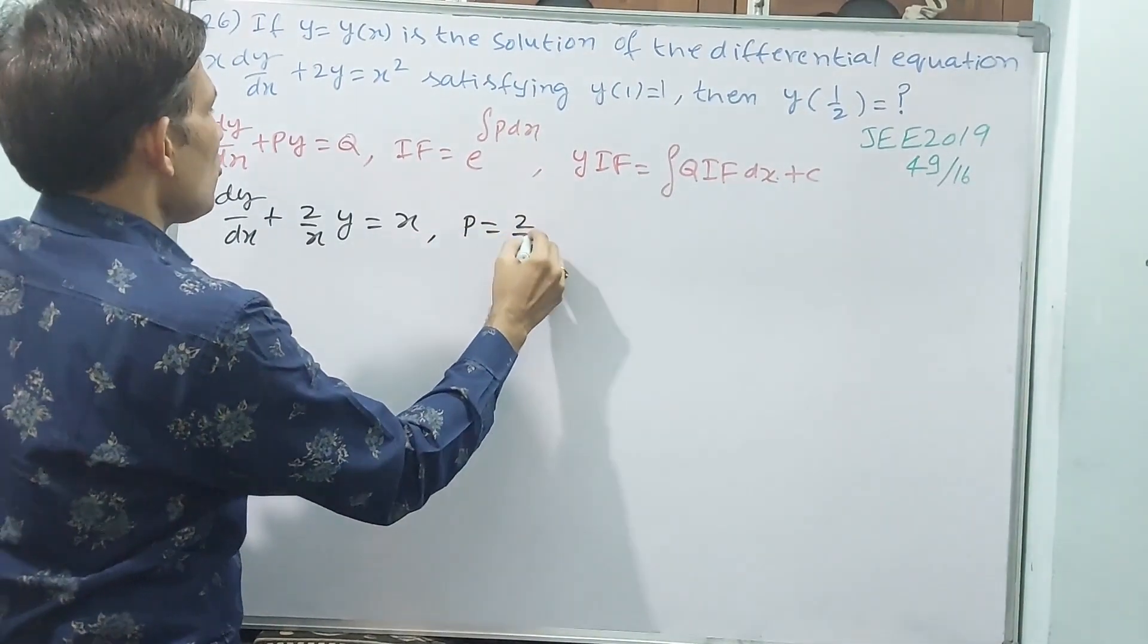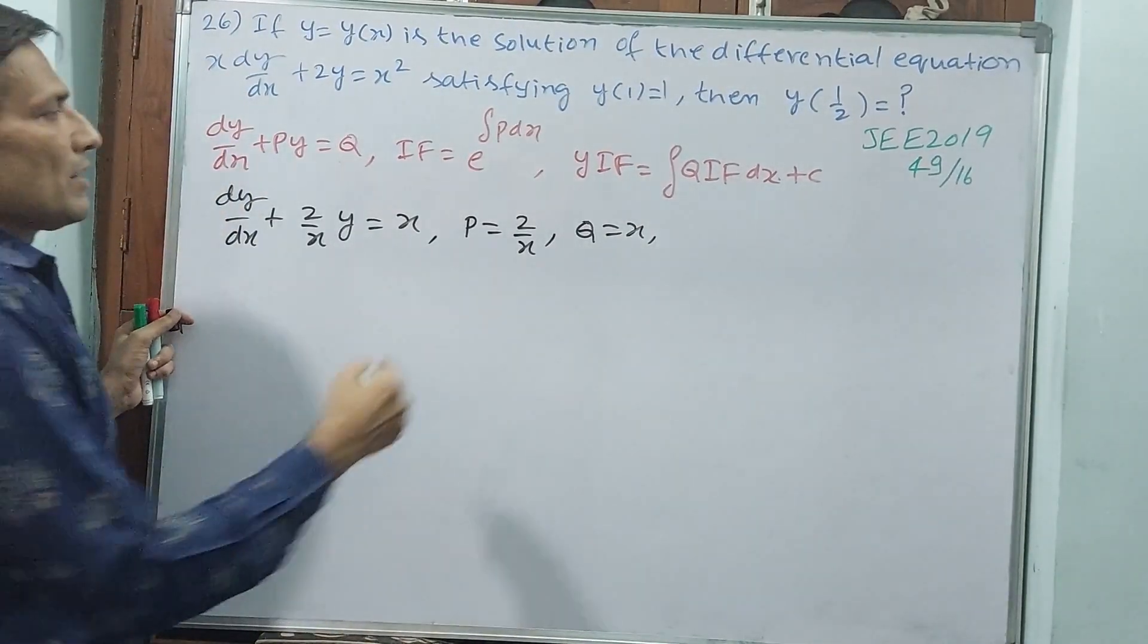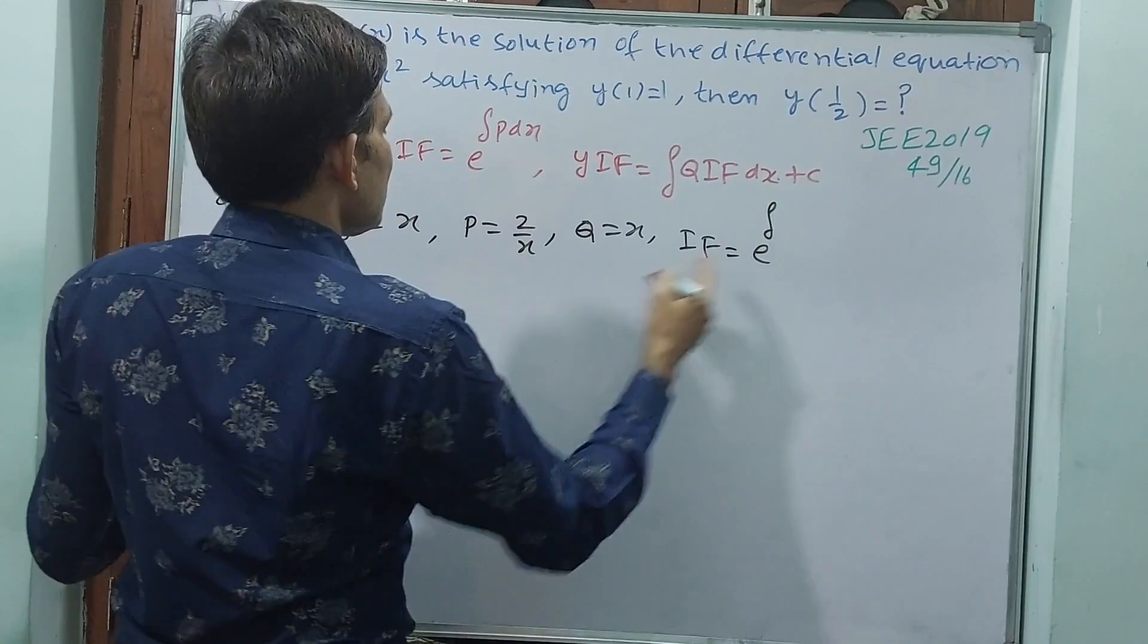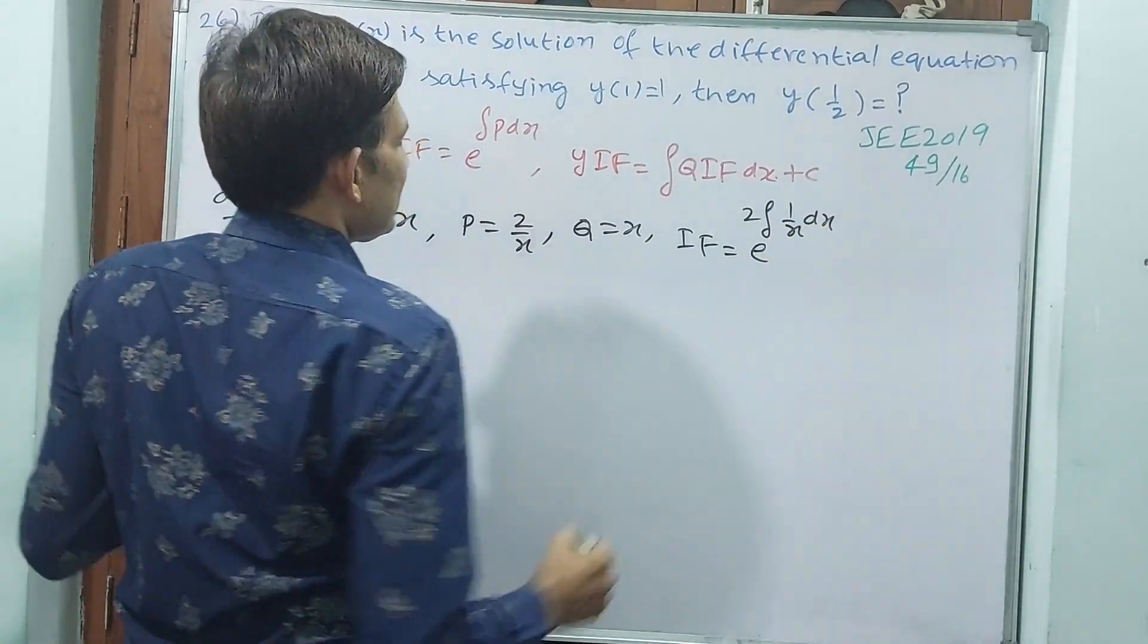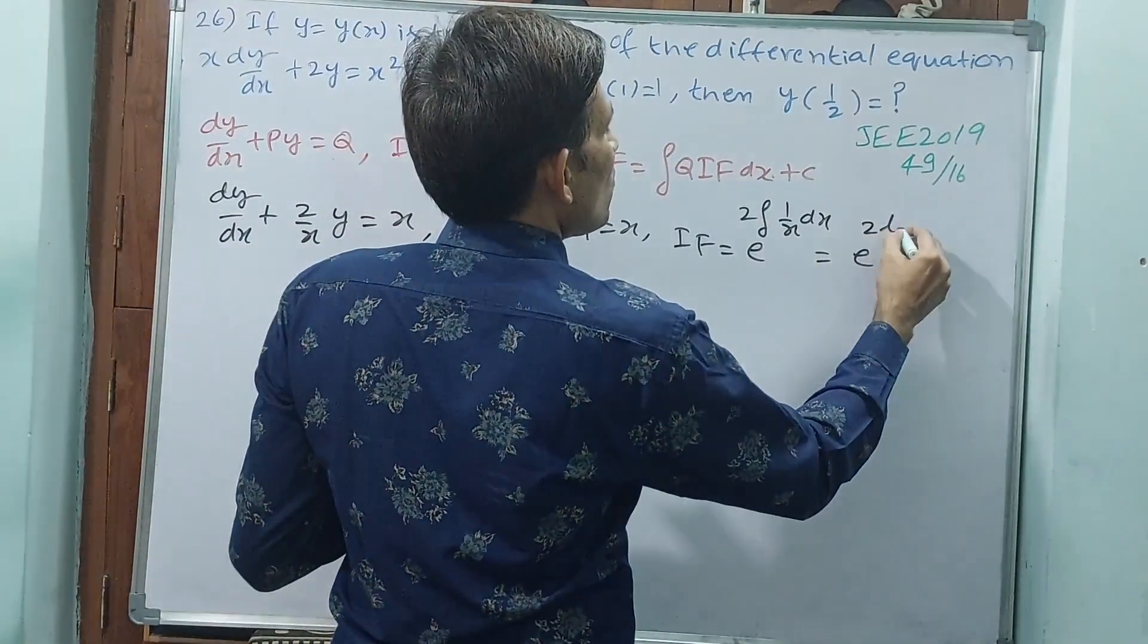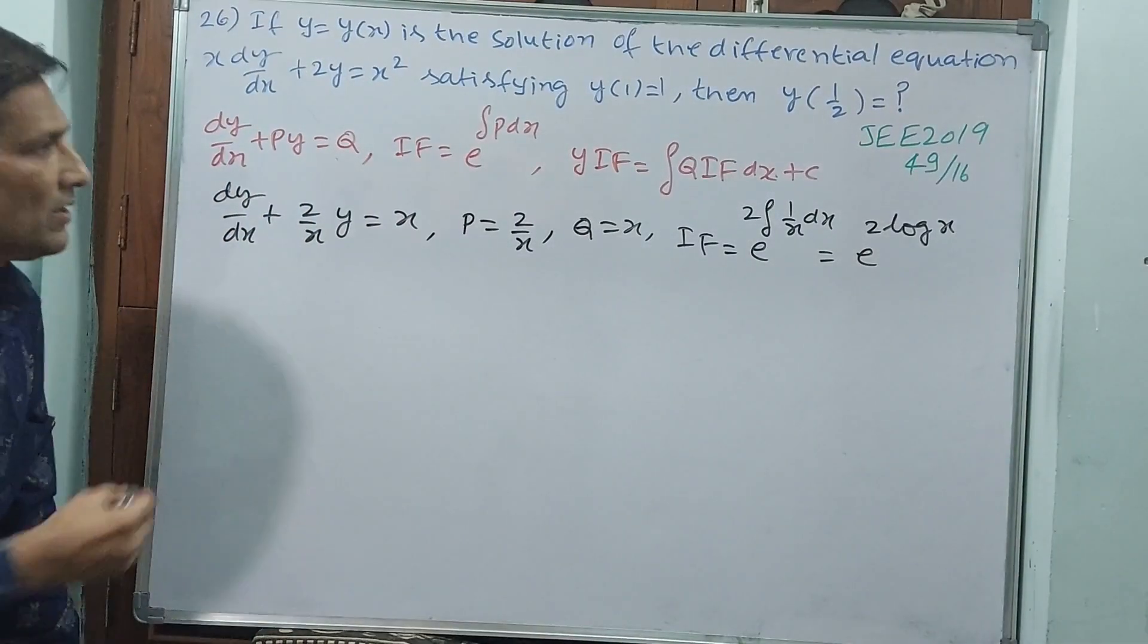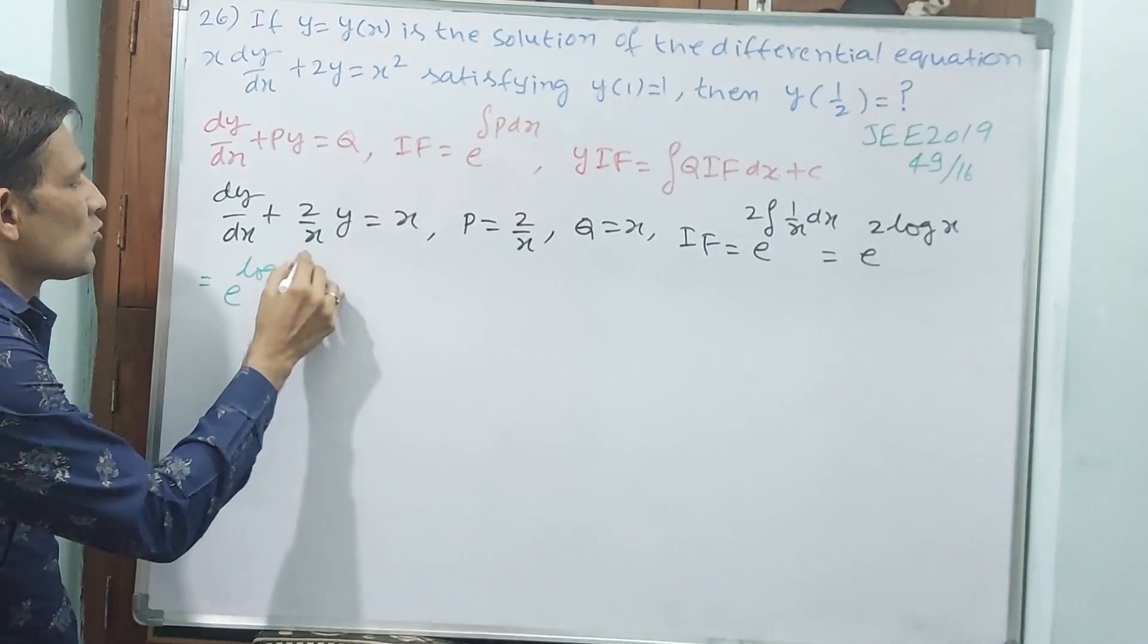Now you write p equals 2 by x, q equals x. Also, integrating factor is equal to e power integral 2 into 1 by x dx. 2 I have taken. That is equal to e power 2 log x. That is equal to e power log of x square.